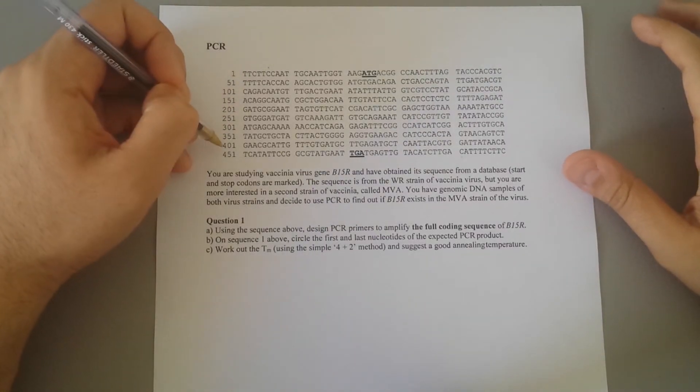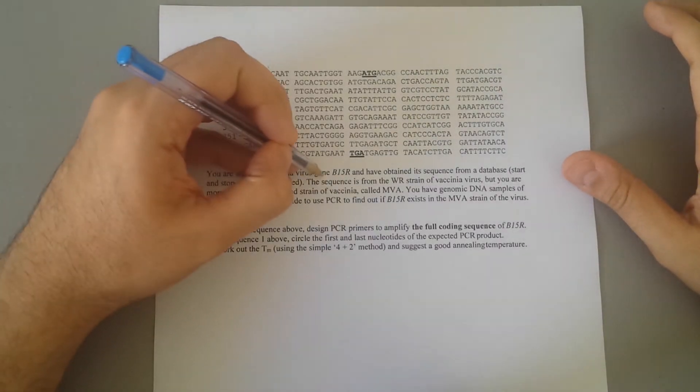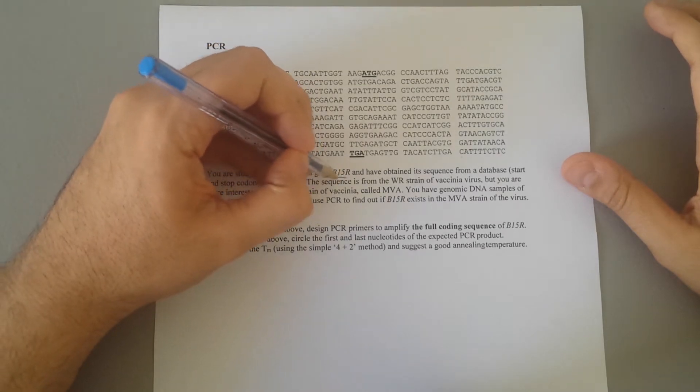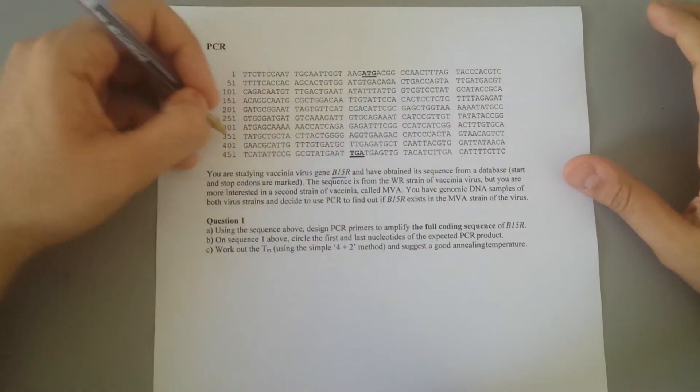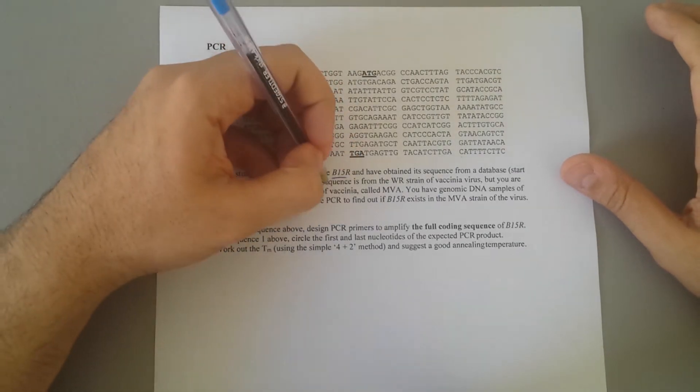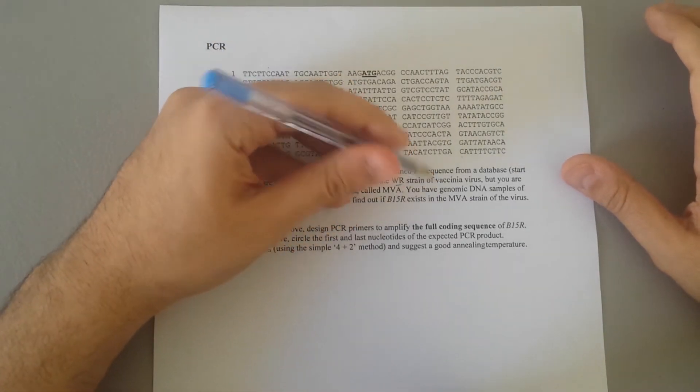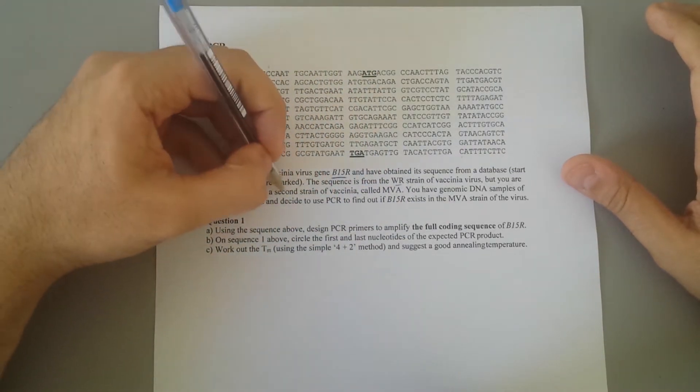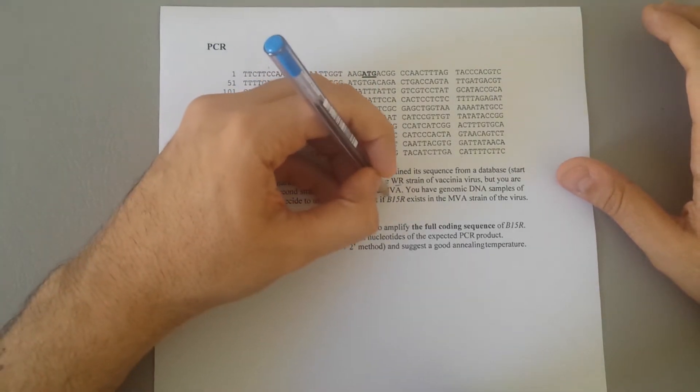We have been given a sequence from the gene B15R, and the obtained sequence is from the database. This sequence is from the VR strain of vaccinia virus, but we are more interested in the second strain of vaccinia which is called MVA.